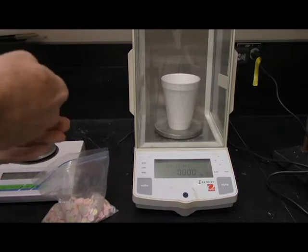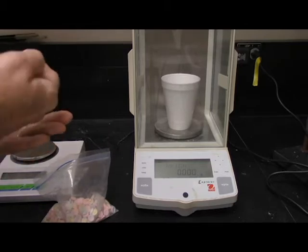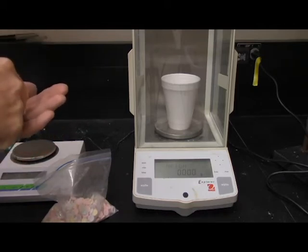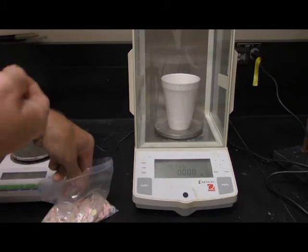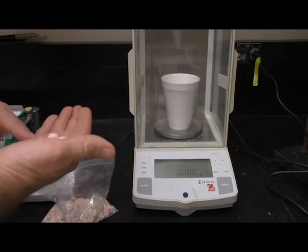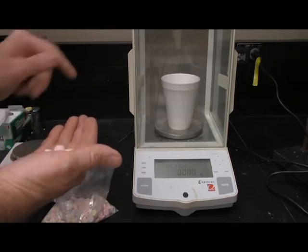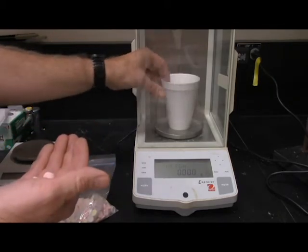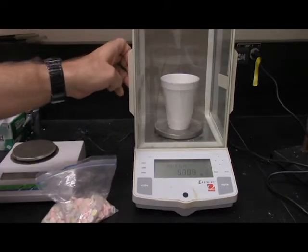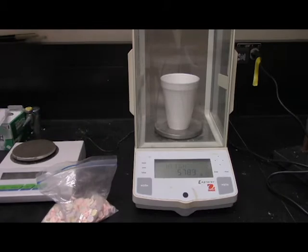1, 2, 3, 4, 5, 6, 7, 8, 9, 10, 11, 12. One dozen Smarties here. We put them in there and we weigh them. And we have our first measurement, 5.785 grams per dozen Smarties. And of course we dutifully write that down in our notebook.